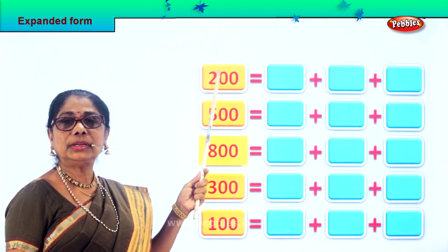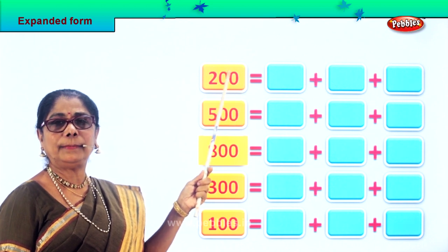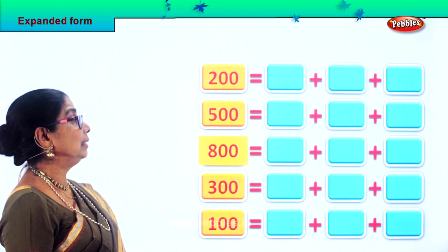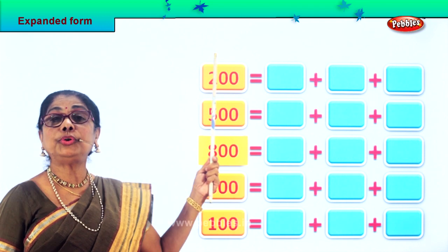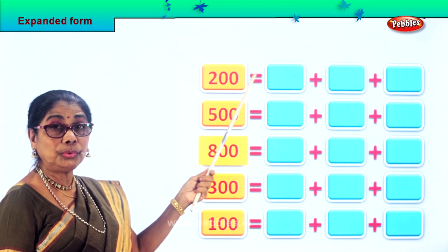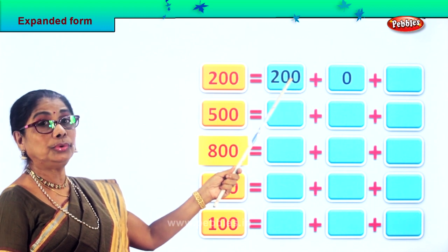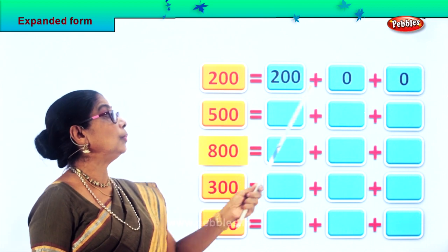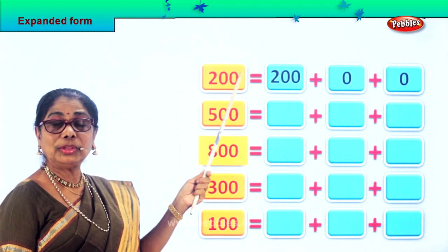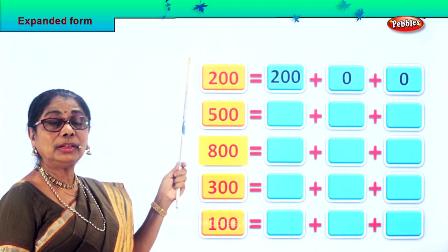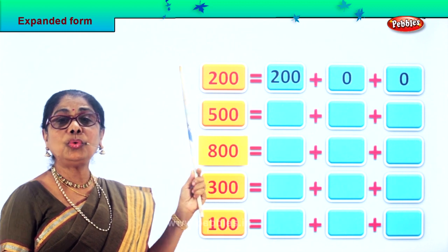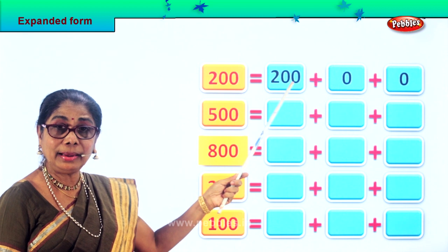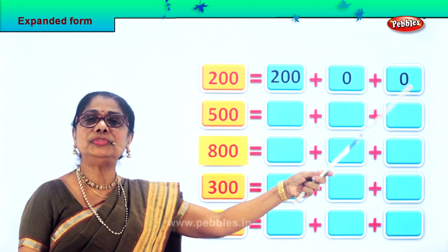Here you have two hundred — zero in the ones place, zero in the tens place, two in the hundreds place. So we are going to do expanded form for two hundred. Two hundred equals two hundred plus zero tens plus zero ones. Two hundred is equal to two hundred plus zero ten plus zero one.